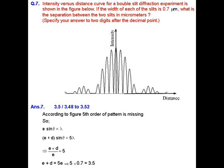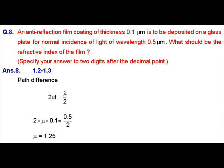If we find the ratio of a plus d and a, we will get a plus d upon a equals 5. If we want to simplify this equation, we will get a plus d equals 5 times a. As the value of a is given to us, we can calculate 5 into 0.7, which is equal to 3.5. So the correct answer here will be 3.5. IIT JAM Physics JTP 2017 NET question number 8. In this question, an anti-reflection film coating of thickness 0.1 micrometers is to be deposited on a glass plate for normal incidence of light of wavelength 0.5 micrometers.